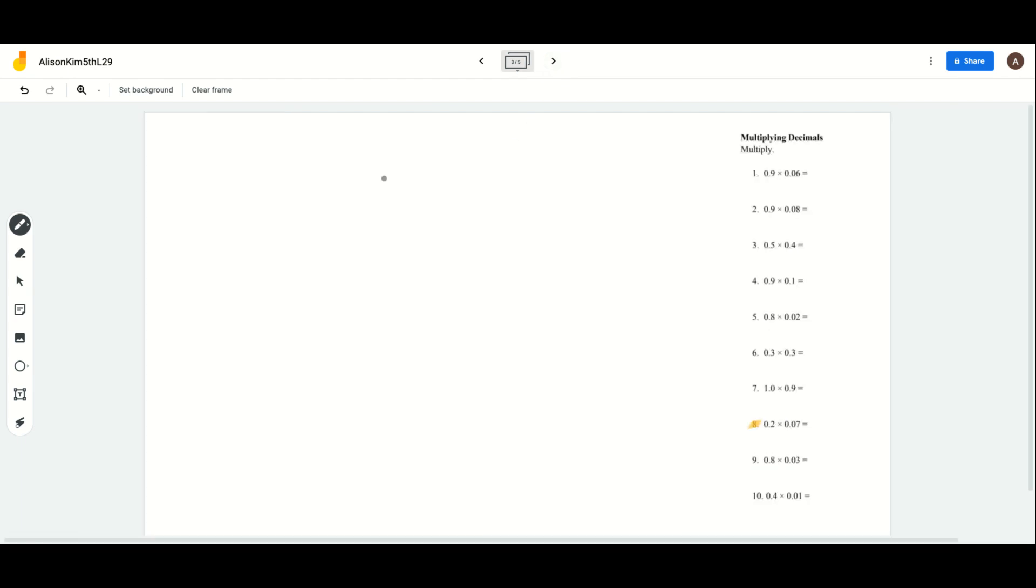Now we're going to do multiplying decimals. This is pretty much review from the other weeks. We're going to do number 8 together. Number 8 gave us 0.2 times 0.07. Once again, I'm going to put the number with the most decimal places on top, which is 0.07. For now, I'm going to ignore the decimal points and I'm just going to multiply regularly.